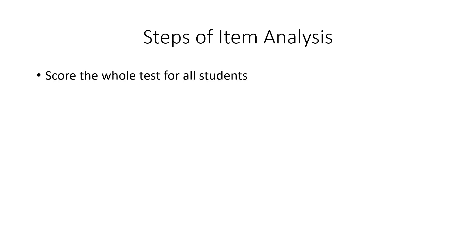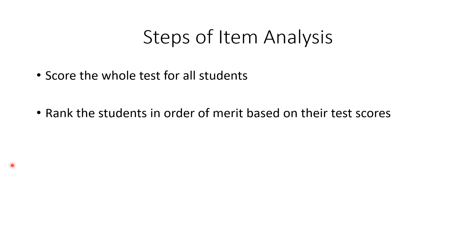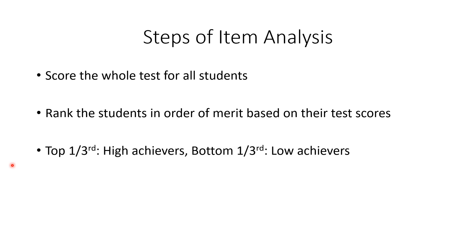When MCQs are given as a formative or summative assessment, at the end of the test the score of the whole test for all the students is calculated. The students are then ranked in order of merit based on their test scores. The top one third of the students are called high achievers and the bottom one third are called low achievers. For example, if there are 100 students, the upper 33 students are top achievers and the lower 33 are low achievers. The middle one third is not taken for item analysis.